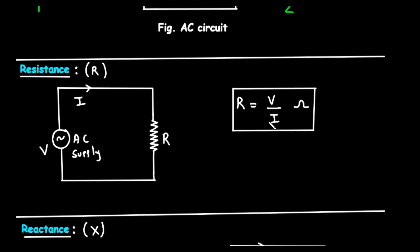It says R equals V divided by I. This means the resistance, R, is calculated by taking the voltage, V, across the resistor and dividing it by the current, I, flowing through it.